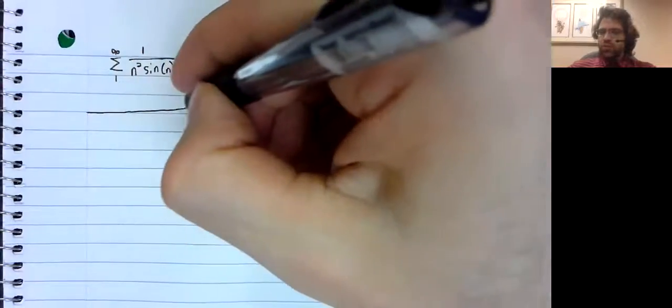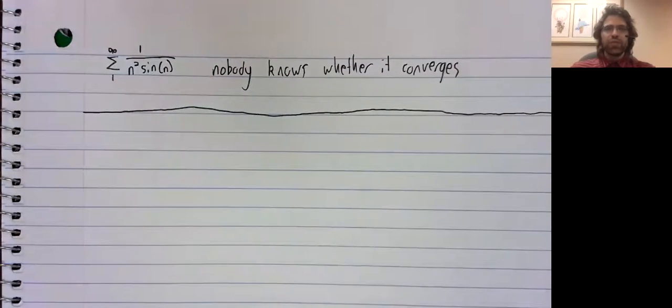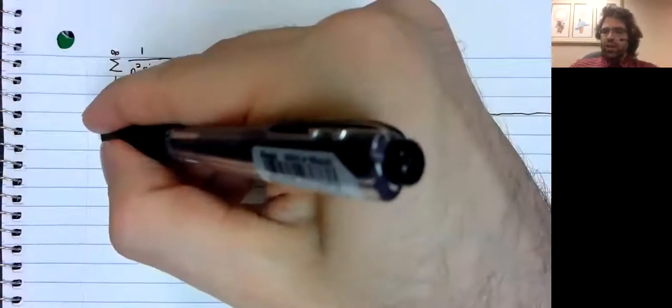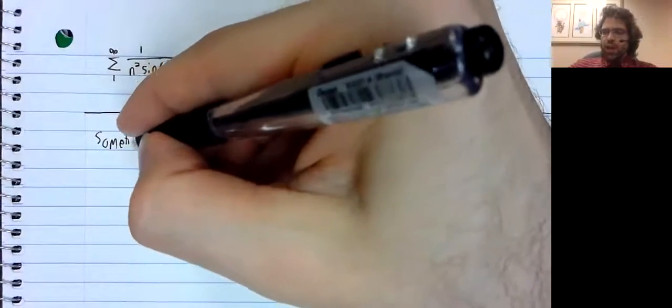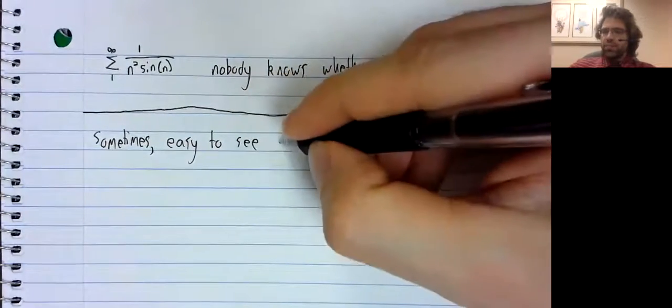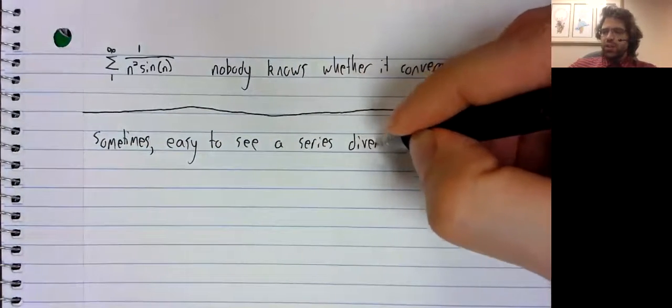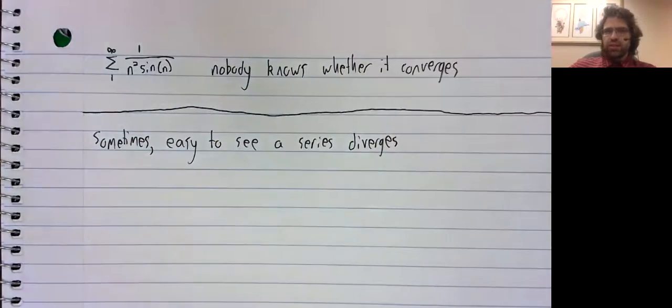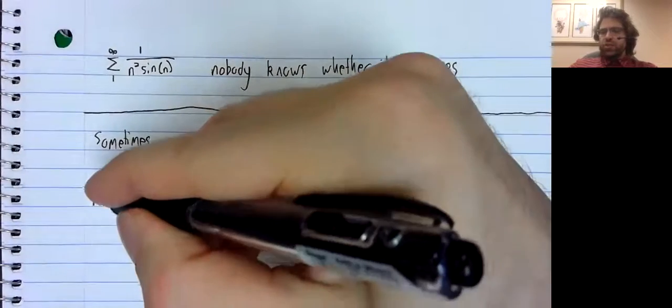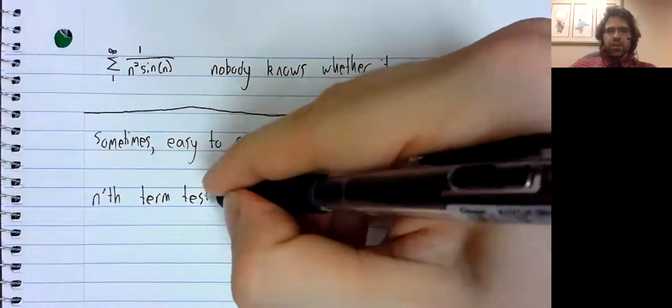So it's not a trivial task that we have set ourselves. But sometimes it's easy to see that a series diverges, and this is using something called the nth term test.